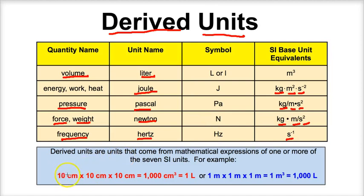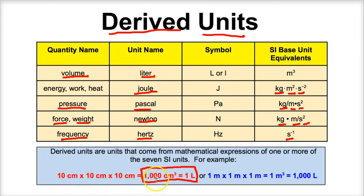For example, 10 centimeters times 10 centimeters times 10 centimeters gives you 1000 cubic centimeters, and 1000 cubic centimeters equals one liter. The liter is a derived unit derived from the SI unit of length — the centimeter or meter. So understand the concept of derived units versus the seven main SI base units: derived units come from those seven main types.